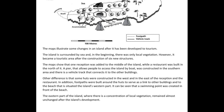Now let's have a look at the second task about the changes in an island. 'The maps illustrate some changes in an island after it has been developed for tourism.' That's good — you've introduced the topic. 'The island is surrounded by the sea.' My only issue with this is that an island, by its very nature, is always surrounded by the sea — that's what an island is — so it's a bit of unnecessary or obvious information. You could start by saying: 'Originally, the island was completely unspoiled and natural, and there was only local vegetation.'